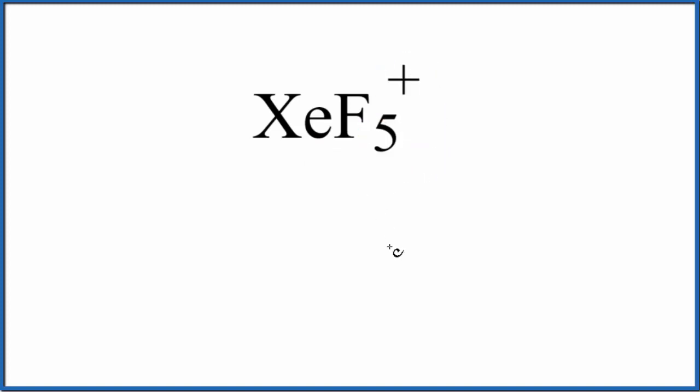So to draw the Lewis structure, we'll put the least electronegative element in the center. That's going to be the xenon. And then we'll put five fluorine atoms on the outside.